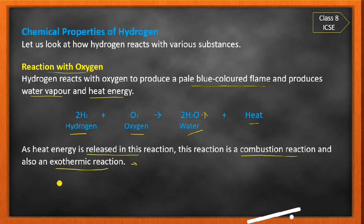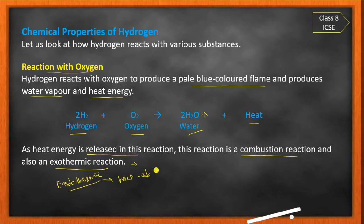There is another type of reaction called an endothermic reaction. In an endothermic reaction, heat is absorbed. So the difference is: in exothermic reactions heat is released, and in endothermic reactions heat is absorbed. The reaction of hydrogen with oxygen is a combustion reaction and is exothermic.